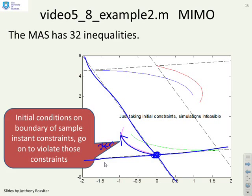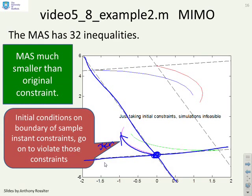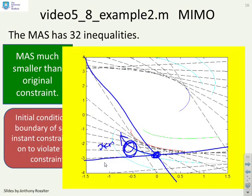And in this particular case, you'll find that it's not enough just to test that I satisfy the constraints at that sample. So what you'll find is that the maximal admissible set is actually much smaller than the original constraint. I must have an initial condition which is not on the boundary but is somewhere inside the boundary to ensure that these predictions do not violate constraints.